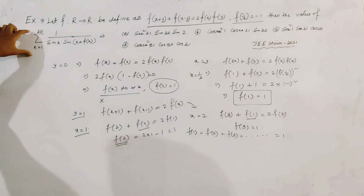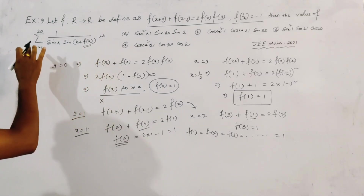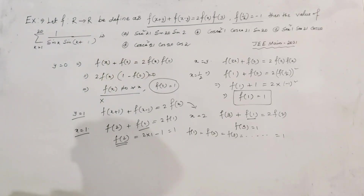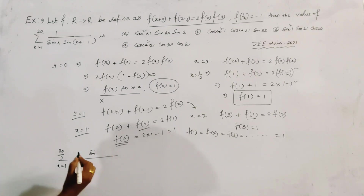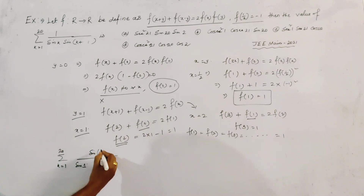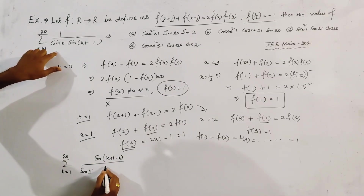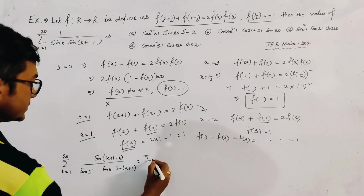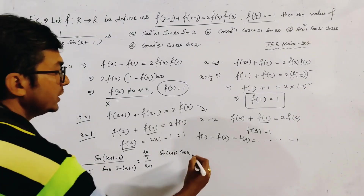Now we deal with the given expression, putting f(k) = 1 for all k = 1, 2, ..., 20. The summation becomes the sum from k = 1 to 20. We multiply numerator and denominator by sin(1), so in the numerator we get sin((k+1) - k) = sin(k+1)·cos(k) - cos(k+1)·sin(k), and the denominator is sin(k)·sin(k+1).